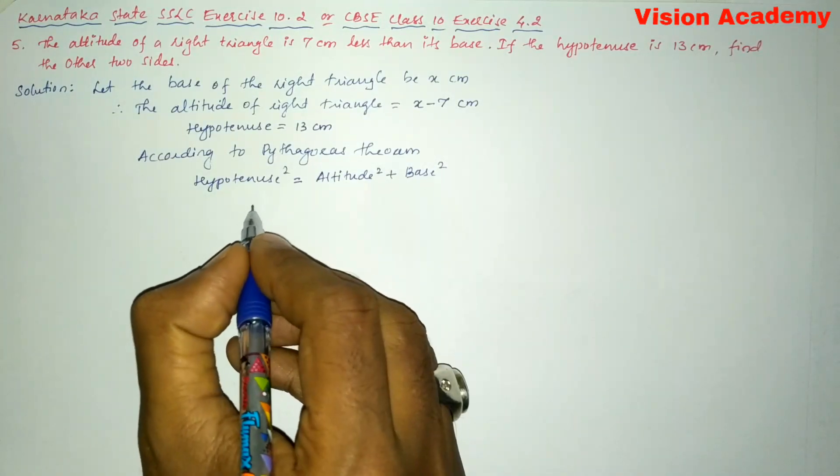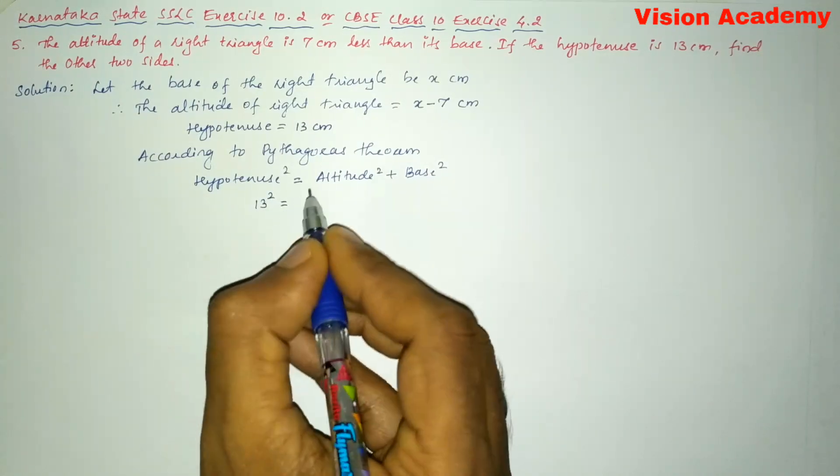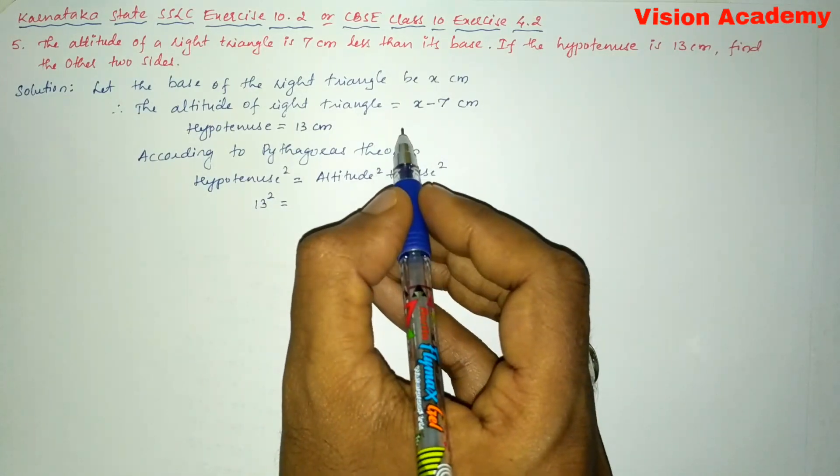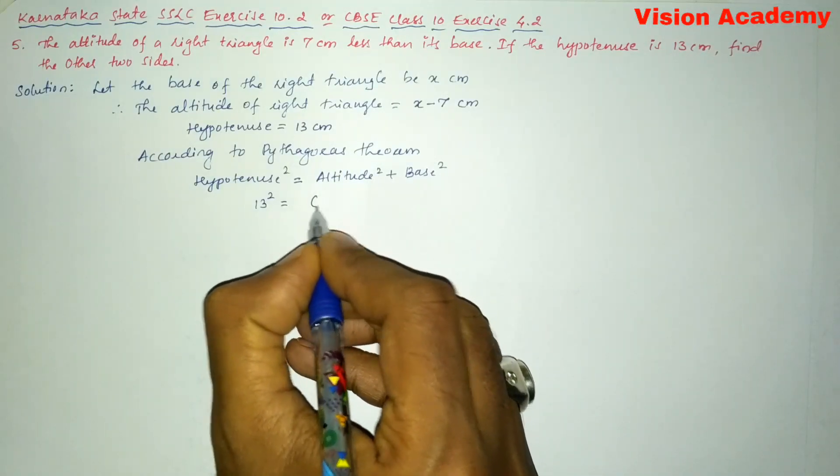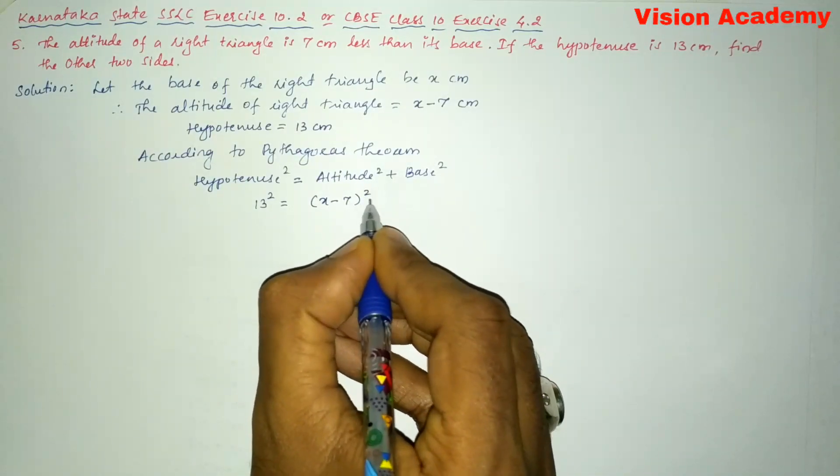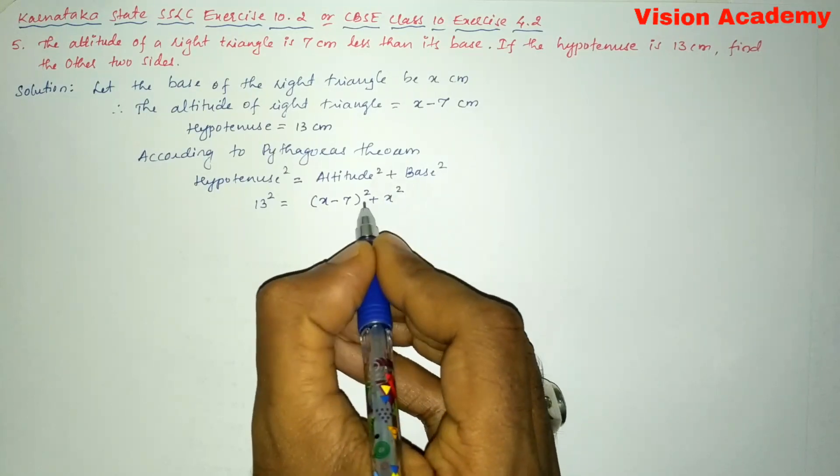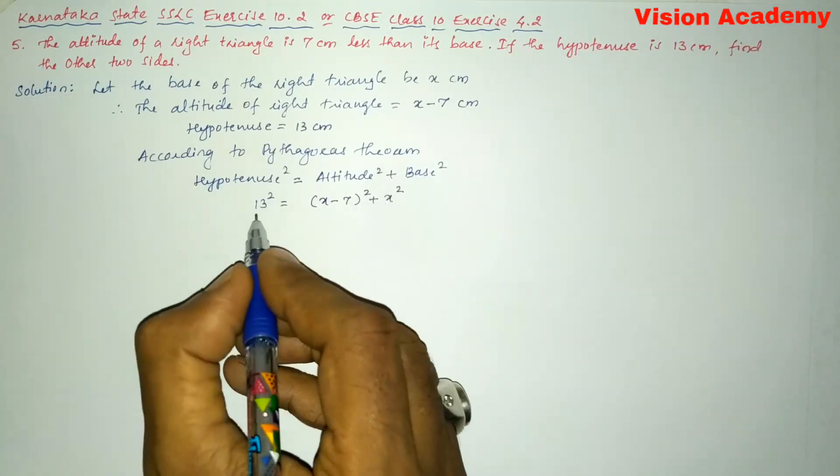So here hypotenuse square is 13 square is equal to altitude we have taken as x minus 7 square, x minus 7 square plus base is x square. Now we will further simplify this one.